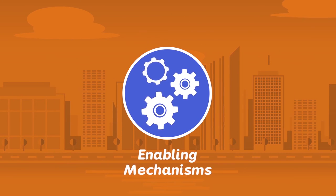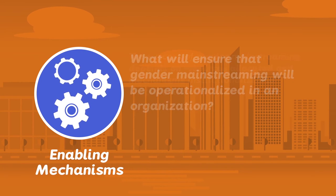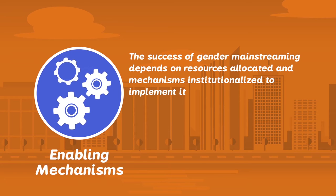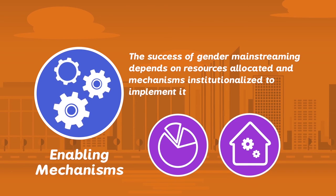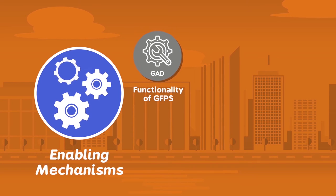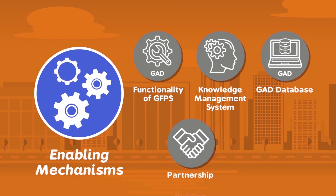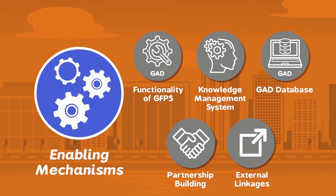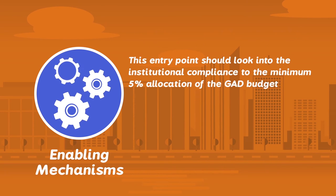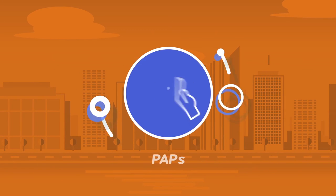The third entry point is the enabling mechanisms. The success of any gender mainstreaming effort depends, to a large extent, on the resources allocated and the mechanisms that are institutionalized to implement it. Some examples of enabling mechanisms include the functionality of the GAD focal point system, presence and use of a knowledge management system and GAD database, and partnership building or external linkages with other organizations to implement GAD programs. This entry point should also look into the institutional compliance to the minimum 5% allocation and utilization of GAD budget.